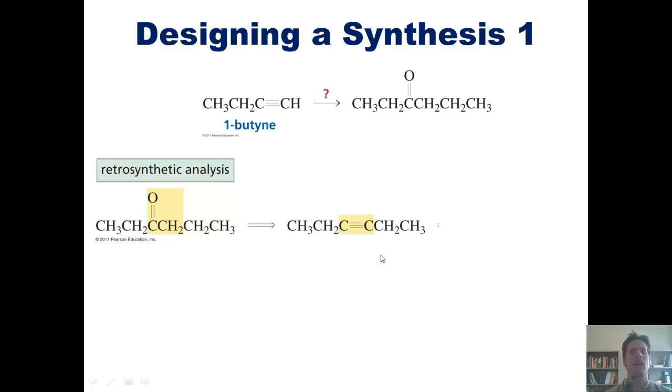Of course there is. I learned in our earlier slide that if I take 1-butyne and treat it with a hard base that can remove this terminal hydrogen, and then an alkyl halide, in this case ethyl bromide or ethyl iodide or ethyl chloride, I can add a CH2CH3 to the end of it.